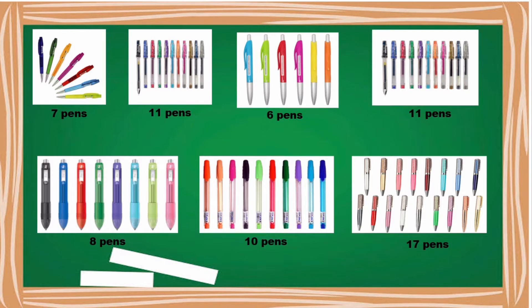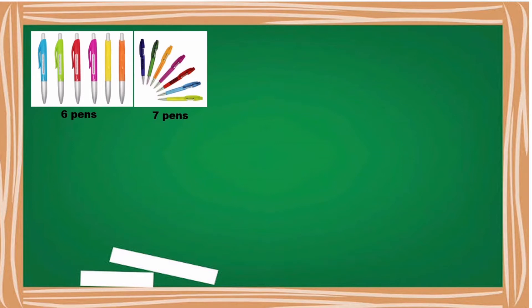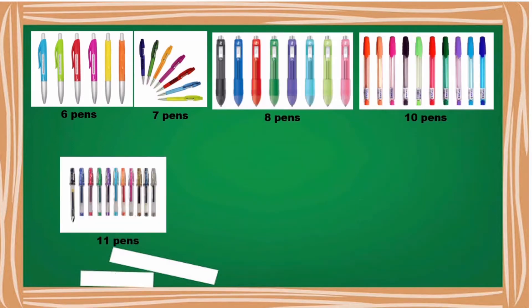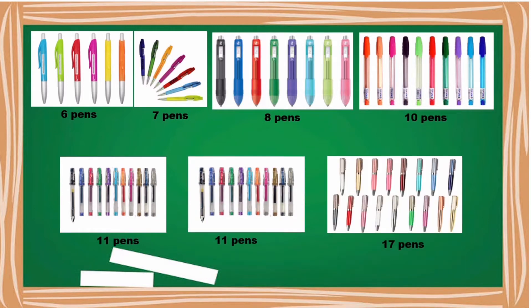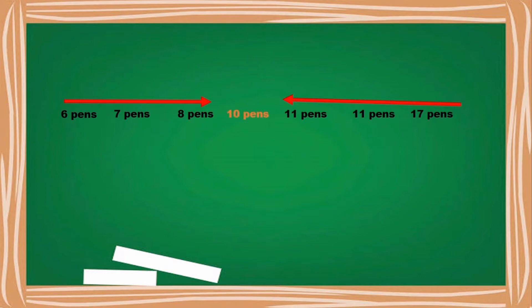We need to arrange the groups in order of the number of bands, starting with the group containing the least number and ending with the greatest. From least to greatest: 6, 7, 8, 10, 11, 11, and 17 bands. Now let us locate the middle group and record the number of bands. Based on this arrangement, 10 is our middle number — that is our median.